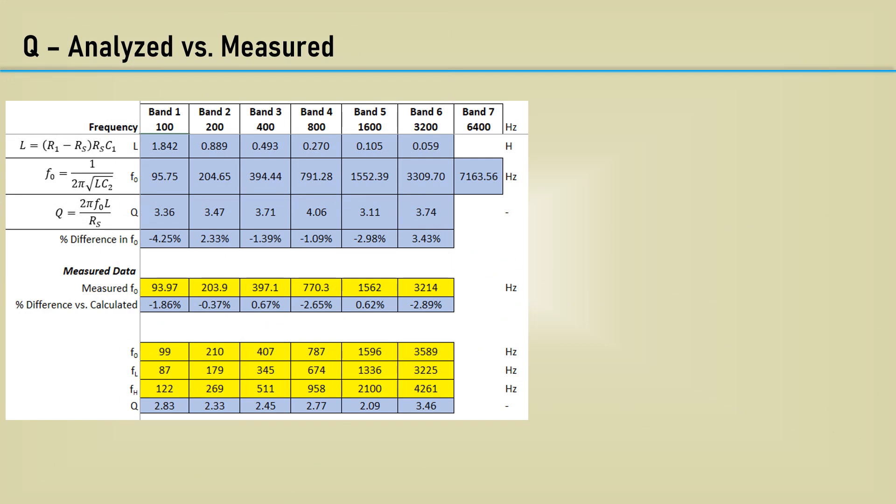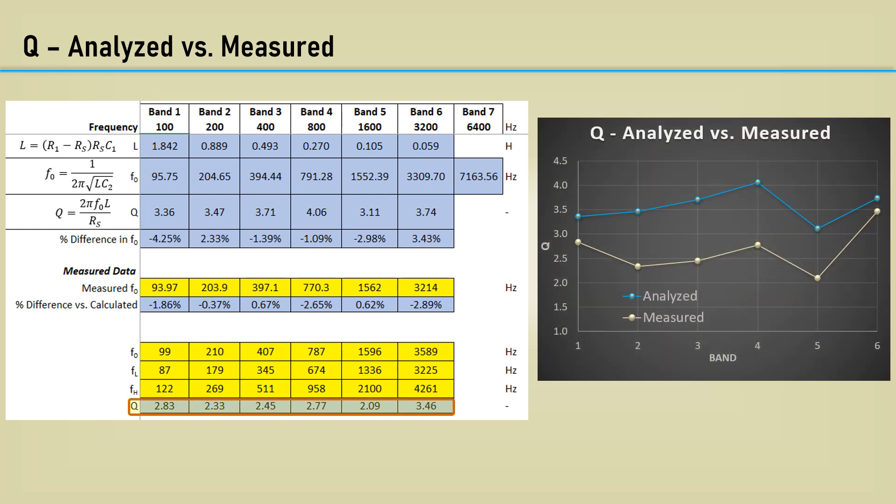I entered the rest of the upper and lower frequencies at the minus 3 dB points, and let the spreadsheet calculate the measured Q. Notice there is good correlation between the analyzed versus the measured Q. The measured Q is lower than the analyzed Q, as you might expect. It also makes sense that the bands on the ends measured versus analyzed values are closer together, since they only have one adjacent band, whereas the others have two.